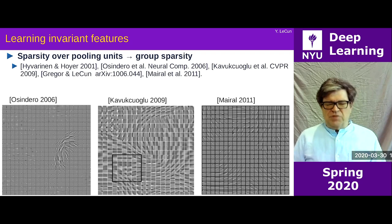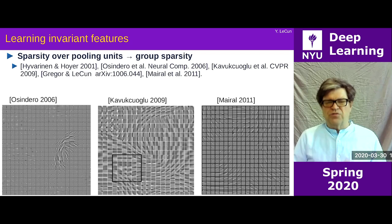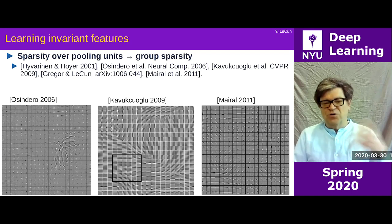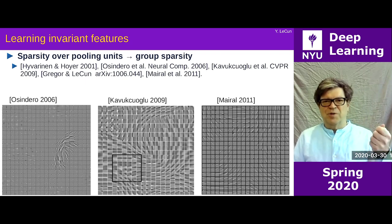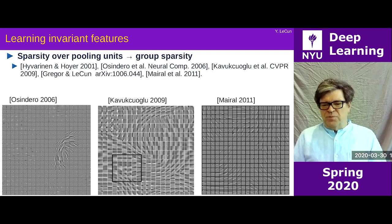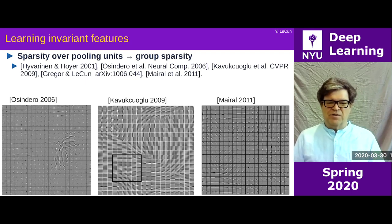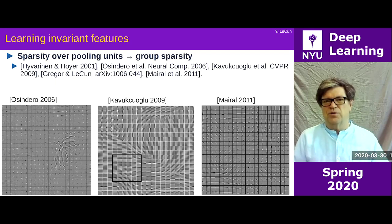Some of those models only have an encoder, some only have a decoder, and some are autoencoders. Osindero's model is an encoder-only model, Julien Mairal's model is a decoder-only model, and Koray Kavukcuoglu's model is basically a sparse autoencoder of the type we talked about last time.